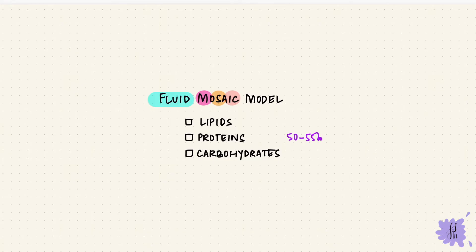The currently most accepted structure is the fluid mosaic model. Fluid from the lipid bilayer and mosaic because it's got a lot of different components: lipids, proteins, and carbohydrates. Around 50 to 55 percent is proteins, 40 percent is lipids, and the rest, around 5 to 10 percent, is carbohydrate.